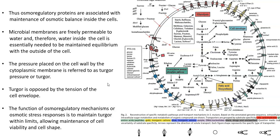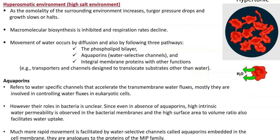On the right-hand side you can see a genome in which different kinds of transporters have been noted. Under a hyperosmotic environment — that is an environment with high salt — as the osmolality of the surrounding environment increases, turgor pressure drops and growth slows down or stops completely. Macromolecular biosynthesis is inhibited and respiration decreases. Under such conditions, some kind of osmoregulatory mechanism is essential to maintain osmotic balance and reduce osmotic stress.